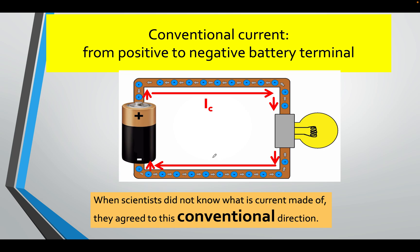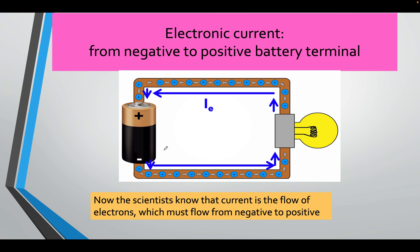We use conventional current, which means it's the flow of positive charges from positive to negative. There is also negative charges, which is electronic current from minus to plus. The electrons that are moving.